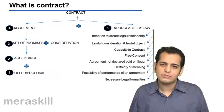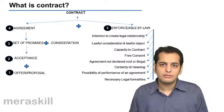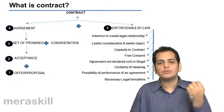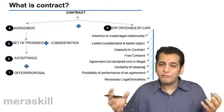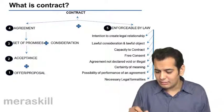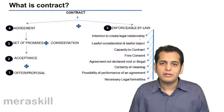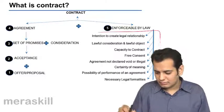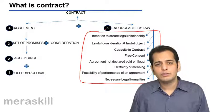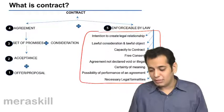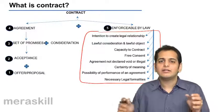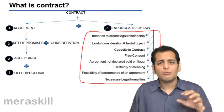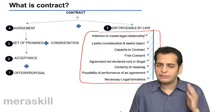Now the question is, what are the things that make this agreement enforceable? What things are required in an agreement so that it can become a contract? To become a contract, it needs enforceability of law. Let us understand what are the things required in an agreement to make it enforceable. These points would be discussed in detail later when we study the essentials of a valid agreement, so now we will just touch upon these points and move ahead.